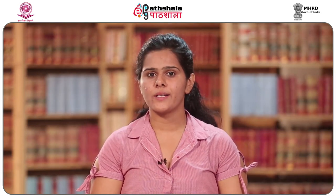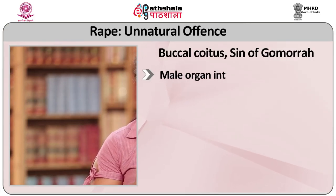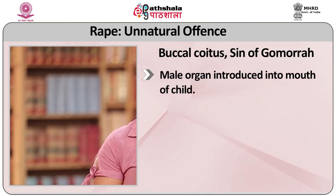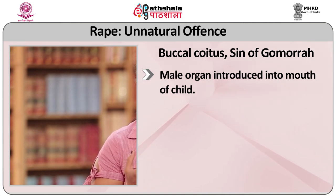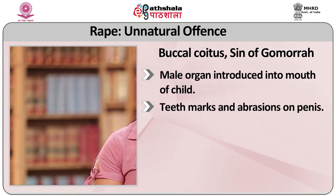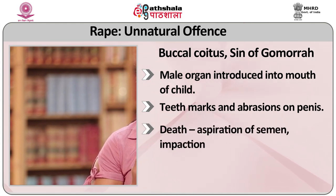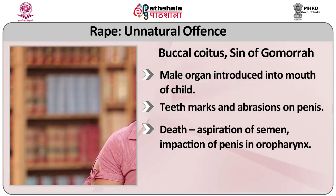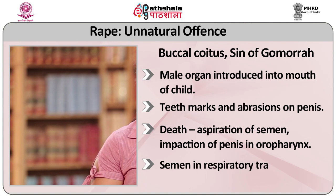Buccal coitus, also called the sin of Gomorrah, is the sexual offence in which the male organ is introduced into the mouth of a child. Evidence includes teeth marks and abrasion on the penis. In cases of death, aspiration of semen, impaction of the penis in the oropharynx, and semen in the respiratory tract or stomach may be found.